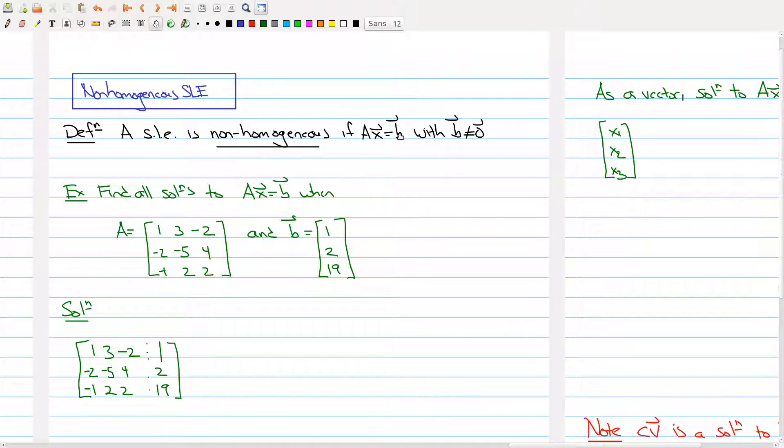Let's look at the example that follows. Say we want to find all solutions to this particular non-homogeneous system, where our matrix A is 1, 3, -2, -2, -5, 4, -1, 2, and 2.